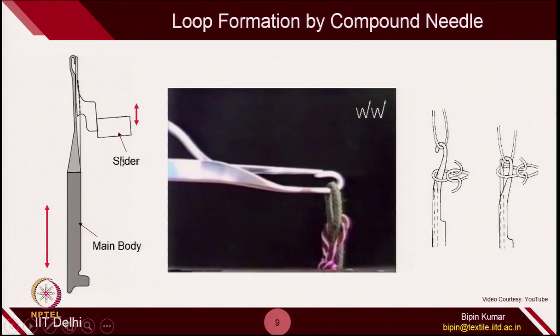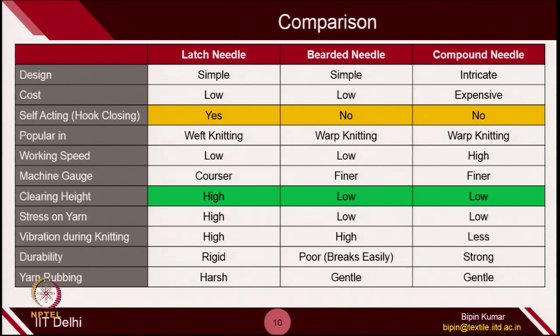The compound needle process is a little more complicated because we have to ensure different amounts of reciprocative movement for the main body as well as the slider part. The design is very complicated and intricate compared to latch needle machines and beard needle machines. Here is a comparison table for the three types of needles popular in the knitting industry: latch, beard, and compound. In terms of design, latch is the most simple, beard also comes under simple design, but compound needle has very integrated and complicated design because different parts are involved in different movements.